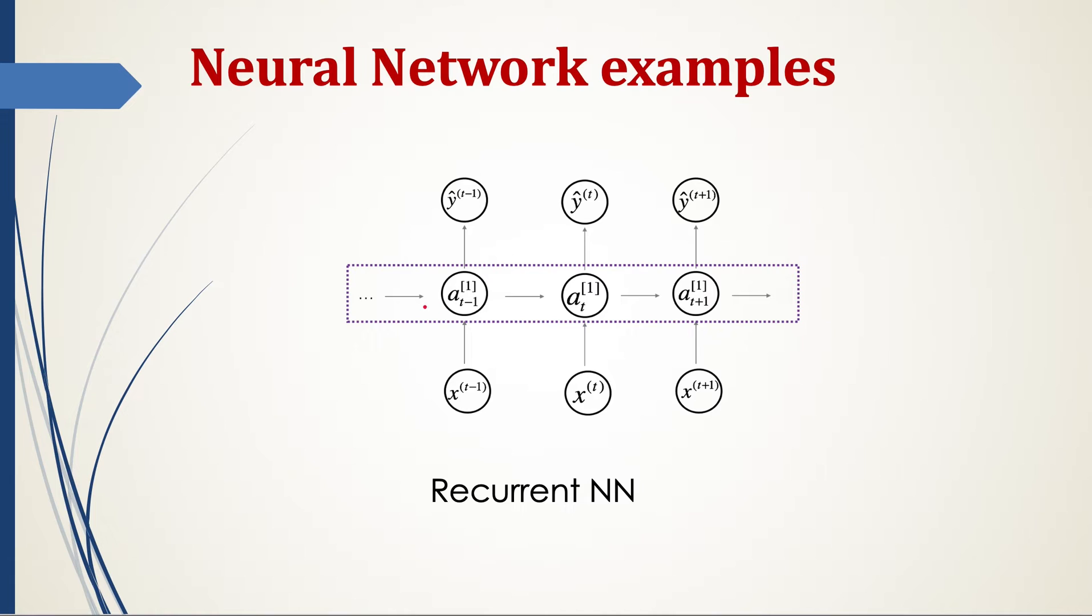And in the case of sequential data, here you see this is the input at time t minus 1, at time t and t plus 1 and so on. And this is the activation at time t minus 1 and the corresponding output. And similarly for time t and t plus 1. So this kind of sequential data is processed using recurrent neural networks.